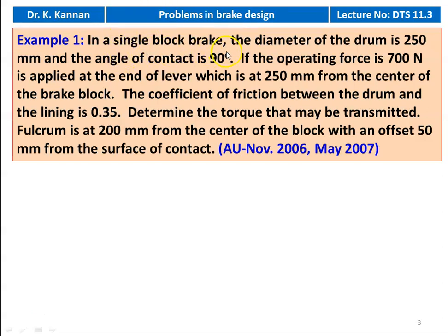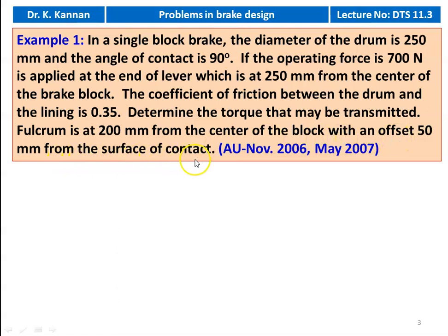In a single block brake, the diameter of the drum is 250 millimeter and the angle of contact is 90 degrees. The operating force of 700 Newton is applied at the end of the lever which is at 250 millimeter from the center of the brake block. The coefficient of friction between the drum and the lining is 0.35. Determine the torque that may be transmitted. The fulcrum is 200 millimeter from the center of the block and an offset of 50 millimeter from the surface of contact.